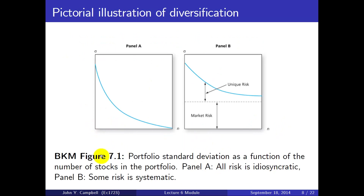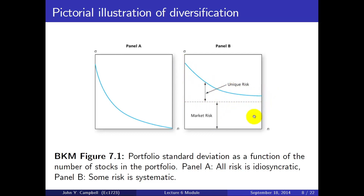Here's Bode, Kane, and Marcus figure 7.1: an illustration of portfolio standard deviation as a function of the number of stocks in the portfolio. In panel A, all risk is idiosyncratic, so it goes to zero as you add more stocks. In panel B, some risk is systematic — called market risk — which is the piece you can't eliminate. The idiosyncratic piece is the piece that goes away with diversification.